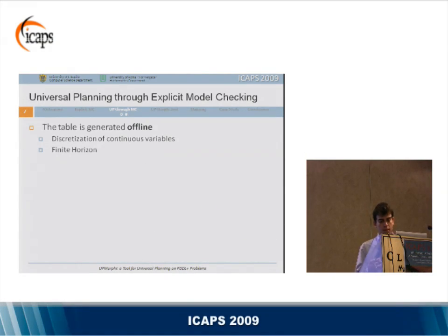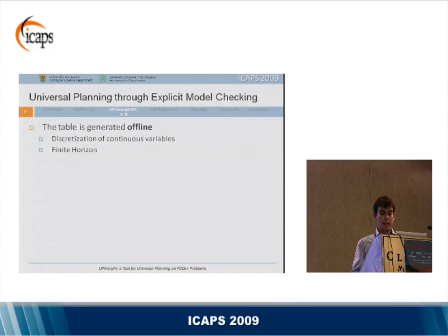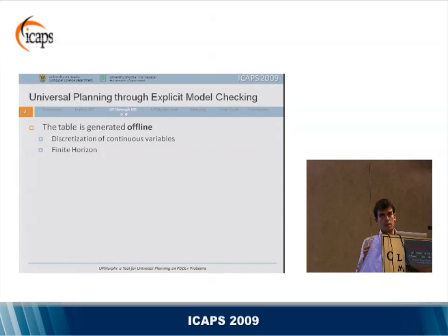Let me highlight some remarks. First, the table is generated offline. Universal planning is a harder task than single planning in terms of time and resources, but once you have the table it is very fast to access. In order to obtain a finite state system we make two restrictions: we discretize continuous variables and fix a finite horizon. In order to validate the discretization, we validate the generated solutions as we will see in the case study. Most practical applications have a maximum time allowed to perform tasks, so assuming a finite horizon is reasonable.